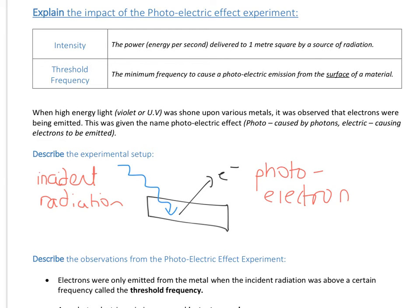Just a quick note here - this process is not ionisation. This electron is one of the delocalised or free electrons in the metal structure. This is why you need it to be a metal, because you need free electrons. This electron is already free of an atom, so you need to give it some energy to escape, but it's not ionisation.